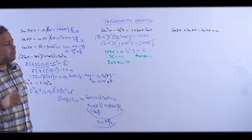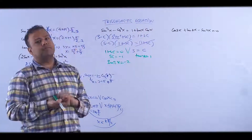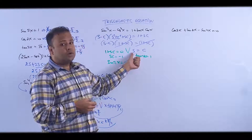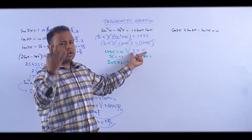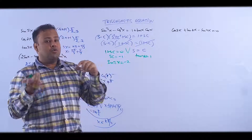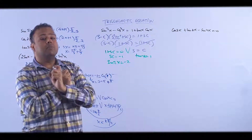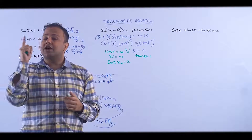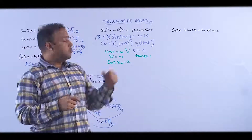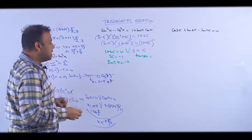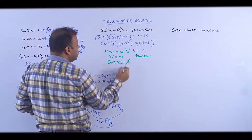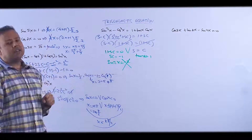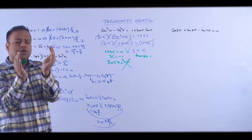We can divide because cos(x) ≠ 0 here — if cos(x) = 0, then sin(x) would also be 0, but sin²θ + cos²θ = 1, so both can't be 0 simultaneously. Also, sin(2x) = -2 is impossible since sine is always between -1 and 1.